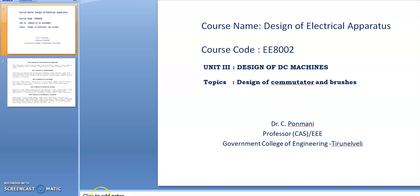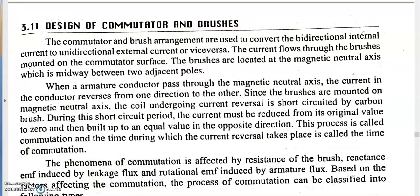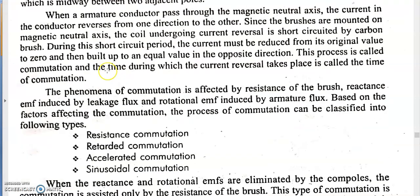Welcome to this video lecture on design of commutator and brushes from the third unit, design of DC machines, in the subject design of electrical apparatus. Different types of commutation in DC machines include resistance commutation, retarded commutation, accelerated commutation, and sinusoidal commutation.